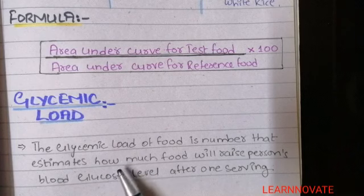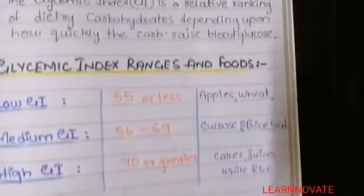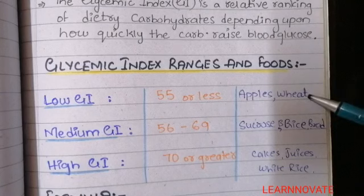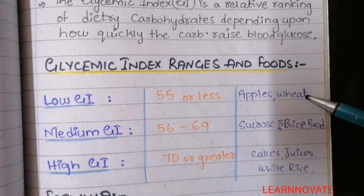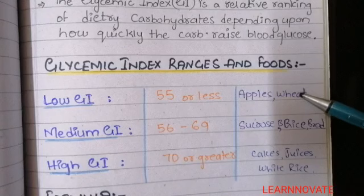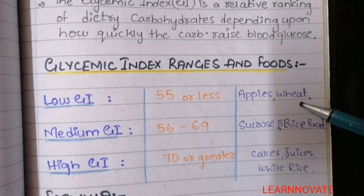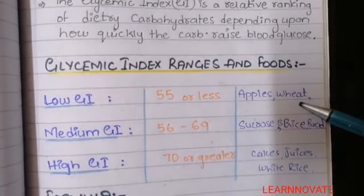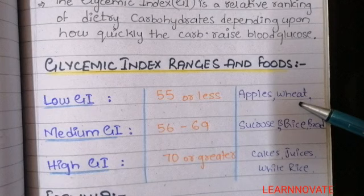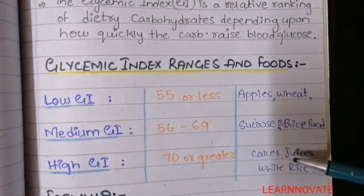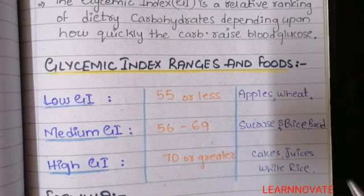There is a difference between glycemic index and glycemic load. We can compare them using the example of wheat. Wheat is a low glycemic index food because it does not cause a sudden shooting of blood glucose when taken normally in one serving. However, wheat is a high glycemic load food. Why? Because one serving of wheat contains many grains — around 100 or more — so per serving there is a large amount. Therefore, the glycemic load of wheat is greater, but the glycemic index of wheat is less. Certain foods with low glycemic index can have high glycemic load, and certain foods with high glycemic index may have low glycemic load.